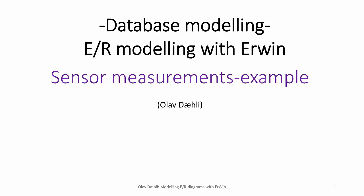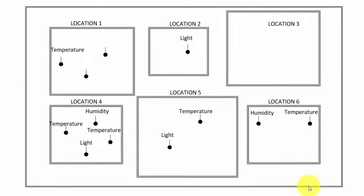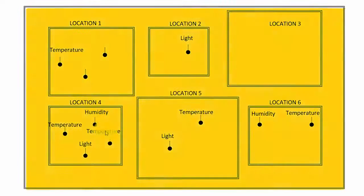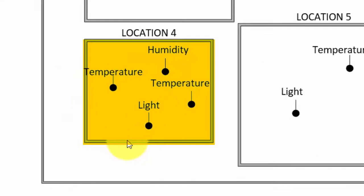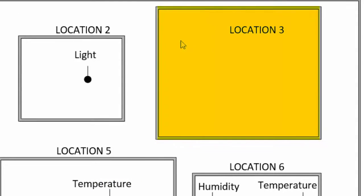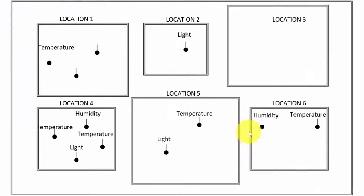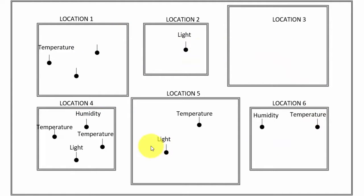In this video we will go through an entire example where we first do some analyzing and then create an ER model. Then we will let Erwin create a physical model. As an example we will look at several sensors at different locations. At each location we can have several kinds of sensors within different categories, and we will at some location be able to store information about the location before we register any sensors. Since the size of the locations can differ, we also want to register the size of the location. At a certain time we want to be able to measure values from several sensors, also from sensors at different locations. This is an overview of what we are going to store in a database, and then we have to create an ER model.